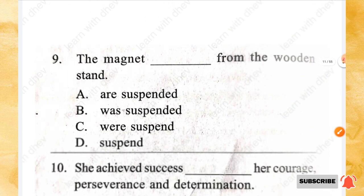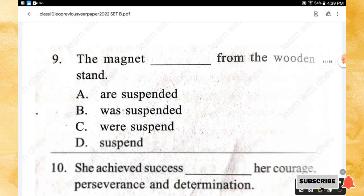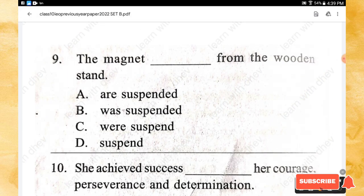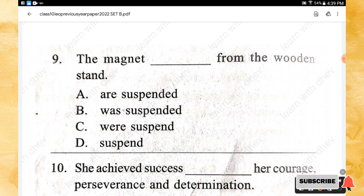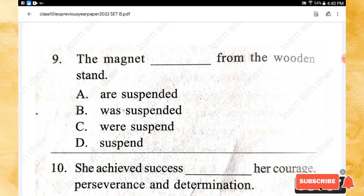Question 9: The magnet _____ from the wooden stand. Options: or suspended, was suspended, where suspended, suspend. The right answer is — was suspended.